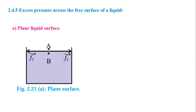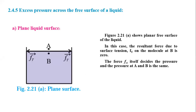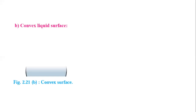Two points A and B: point A is above the plane surface and point B is below the liquid surface. In this case, the resultant force due to surface tension on molecule B is zero. The force F_A itself decides the pressure, and the pressure at A and B is the same. So pressure above and below a plane surface of liquid is same.